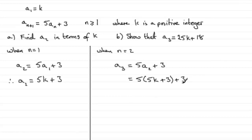And if we expand this, then we're going to have 5 times 5 is 25, so 25k, plus 5 times 3 which is 15, and then plus the 3 on the end here. And you can see that that gives us 25k plus 18 as we were asked.